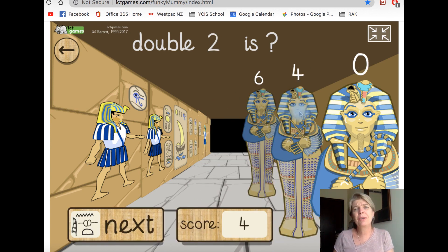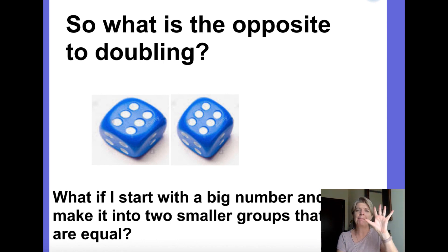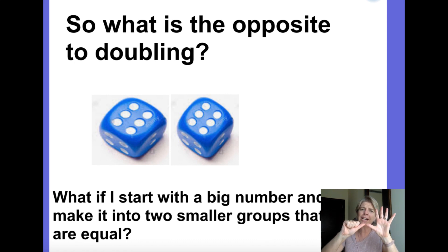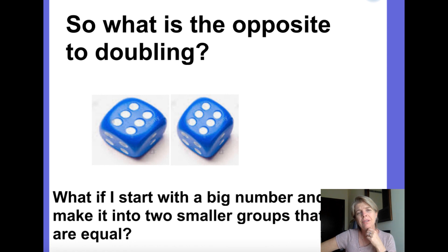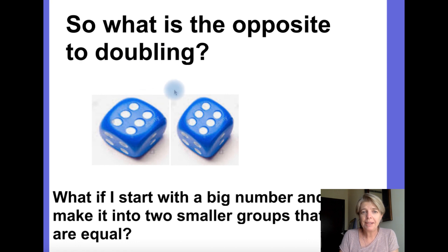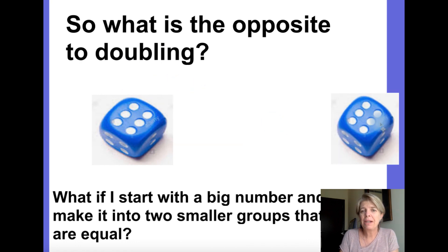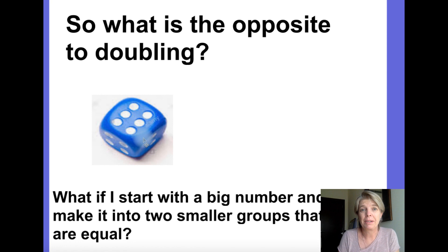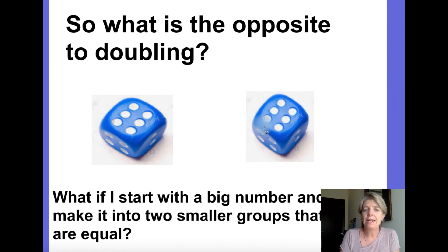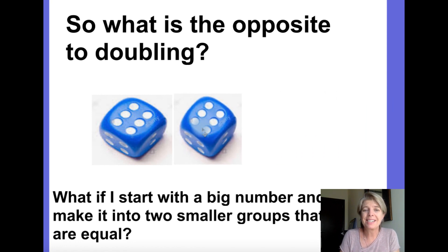Now we're going to go and learn about the opposite to doubles. When we double, we have one number and we add the same to make it bigger. But what if I take away the same and make it smaller? Do you know what that's called? Let's have a look. When I do doubling, I start with a small number — six. Then I bring six more and I double it and have twelve.